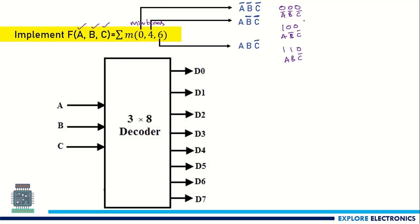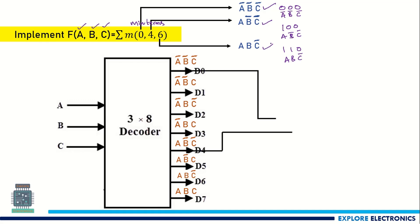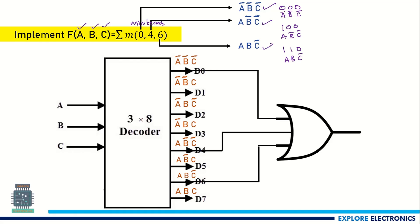Using the 3-to-8 decoder, we know all these minterm expressions are available at the output. We need Ā B̄ C̄, A B̄ C̄, and A B C̄, so we take these three outputs and connect them to an OR gate. This OR gate gives the sum, producing the output function F(A, B, C). This is how we can implement any three-input function using a 3-to-8 decoder.